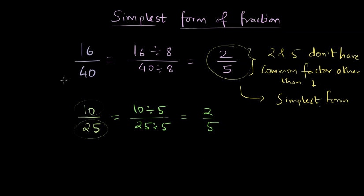For example, if we just take 16 by 40 again. If you are not sure, we definitely know that both are even numbers. So we can divide both by 2 and arrive at a fraction, something which looks like this: 8 by 20.